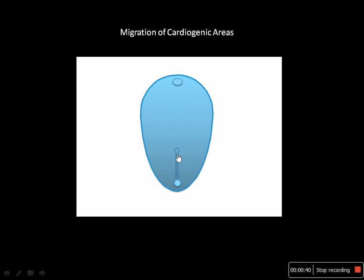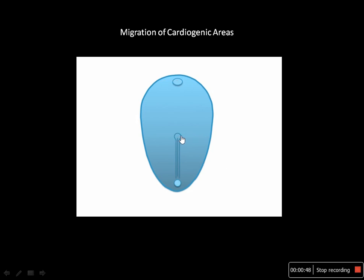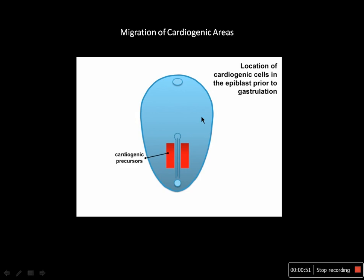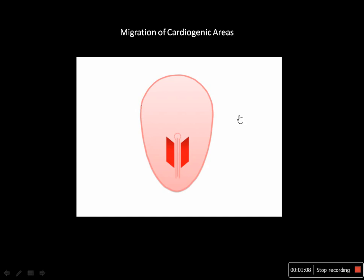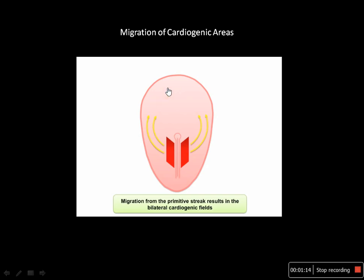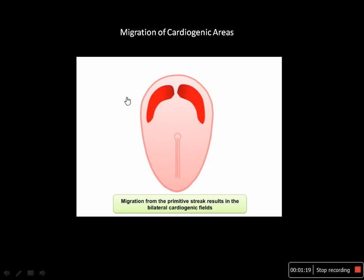This is a very basic bilaminar disc — here is the epiblast, this is the procaudal plate, and this is the developing primitive streak. Here is the primitive node, also called the blastopore or Hensen's node. As the epiblast gives rise to mesoderm as well as endoderm, the cardiogenic precursors are initially located in the epiblast itself. Later they migrate from the primitive streak and reach the mesoderm, migrating cranially to achieve their proper position.